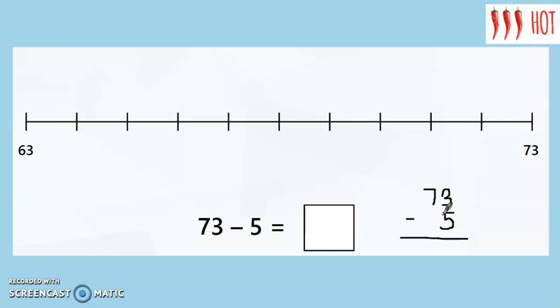So I'm taking away 5. Do I have 5 ones? No. How many ones do I have? 3. 1, 2, 3. Draw a jump. That's worth 3. That will take me back to 70, won't it? Have I taken away 5 yet? No. I've only taken away 3. Now I know that 5 is 2 more than 3. So I'm going to do a jump that's worth 2. I know 2 and 3 is equal to 5.